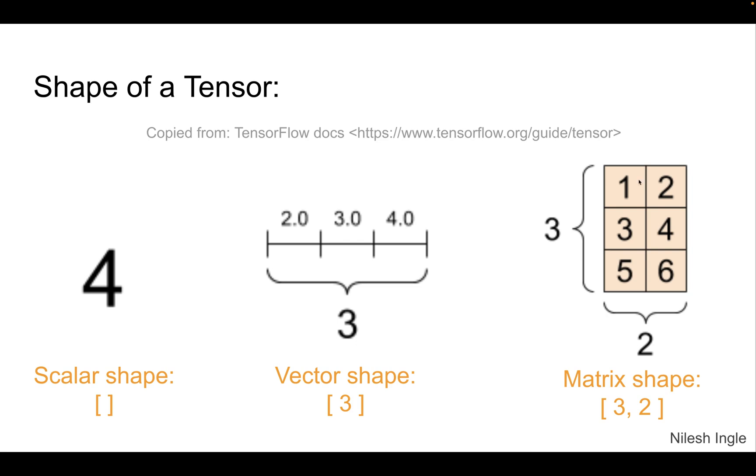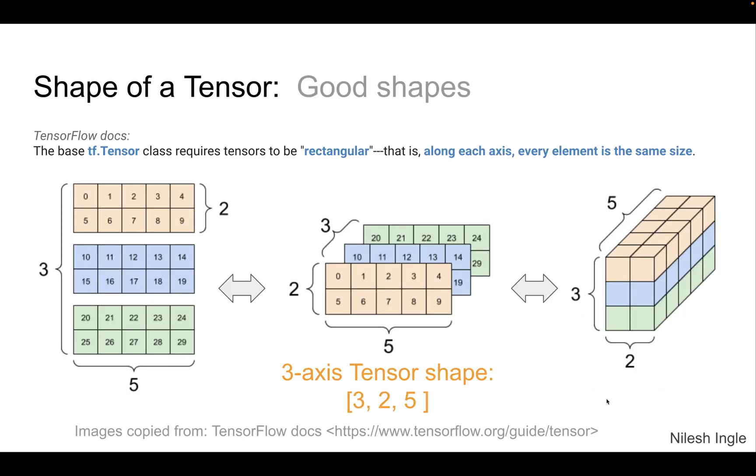Now, in the third case, we have three by two shape, because we have three rows and two columns. So therefore, we have a shape of three by two.